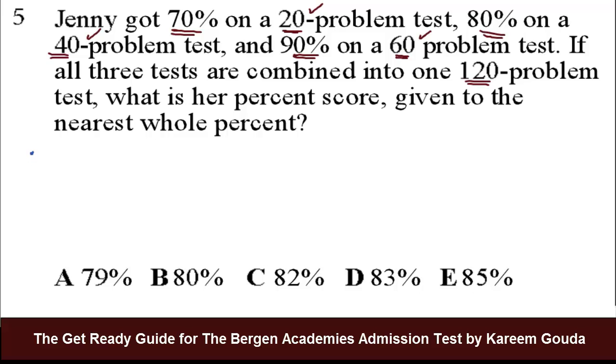Okay, so really quickly, on the first test, she got 70% right of 20 problems. So 70% over 100 times 20. Take away a 0 with a 0, a 0 with a 0 up here, you're left with 14. Now, another fast way to do this would be to say, well, 70% of 10 is 7. So 70% of 20 is double 7, which is 14.